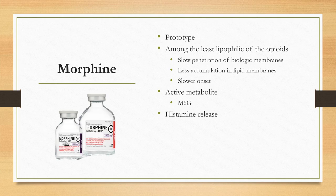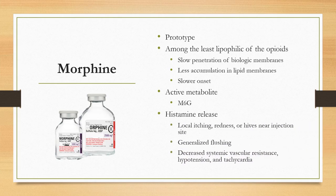Morphine is also associated with histamine release from mast cells, causing itching and redness at the injection site or red streaking along the IV route, as well as generalized flushing. Although considered cardiovascularly stable with no direct effect on blood pressure, heart rate, or rhythm, histamine release from higher doses of morphine can be associated with decreased systemic vascular resistance, hypotension, and tachycardia.